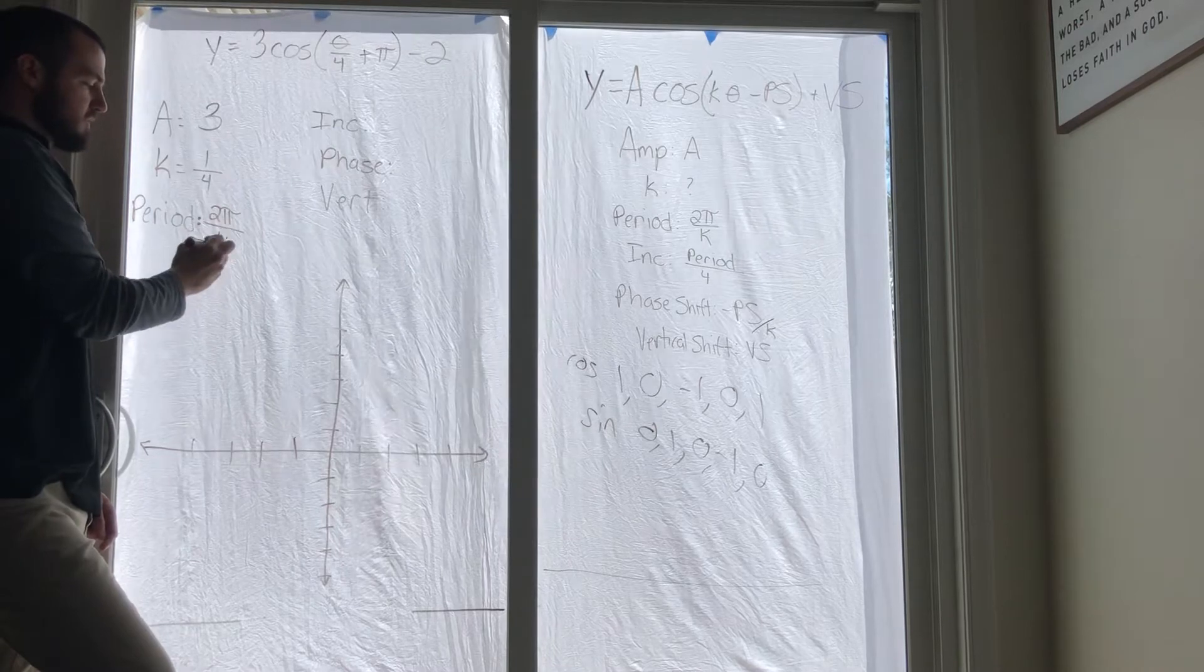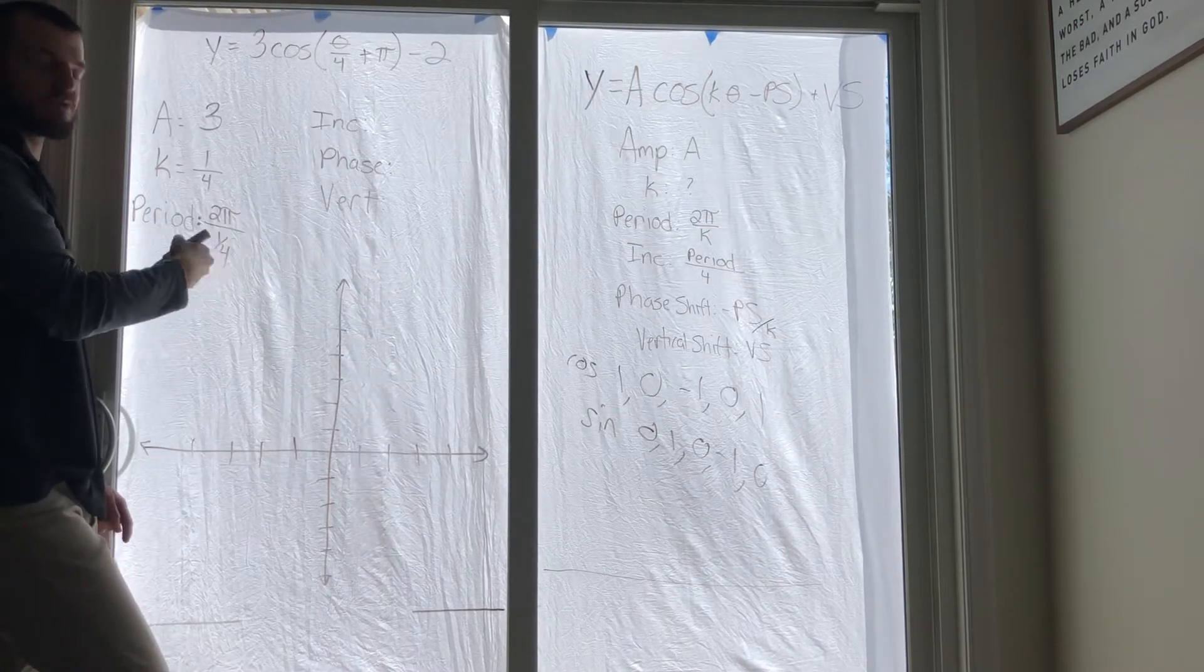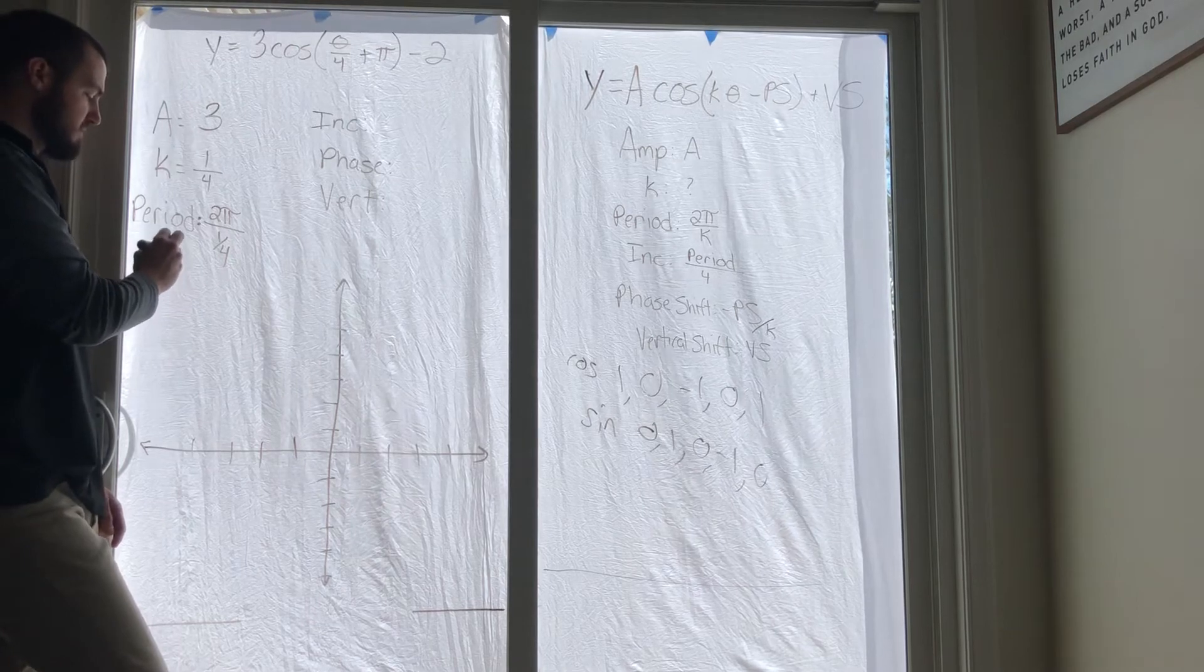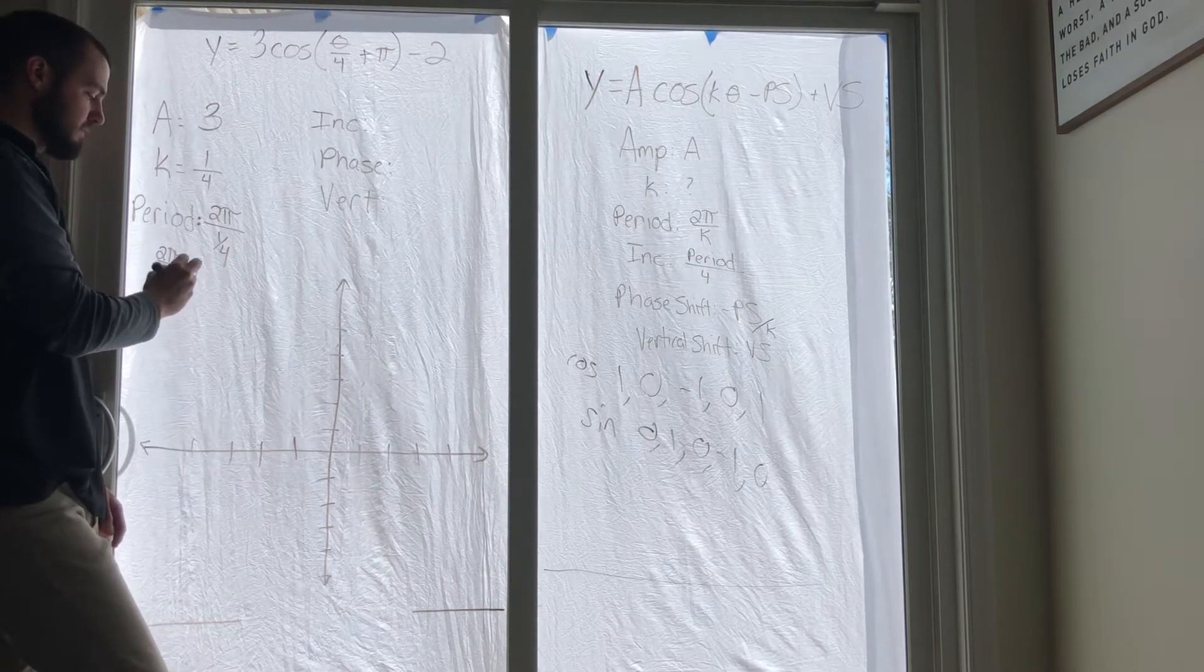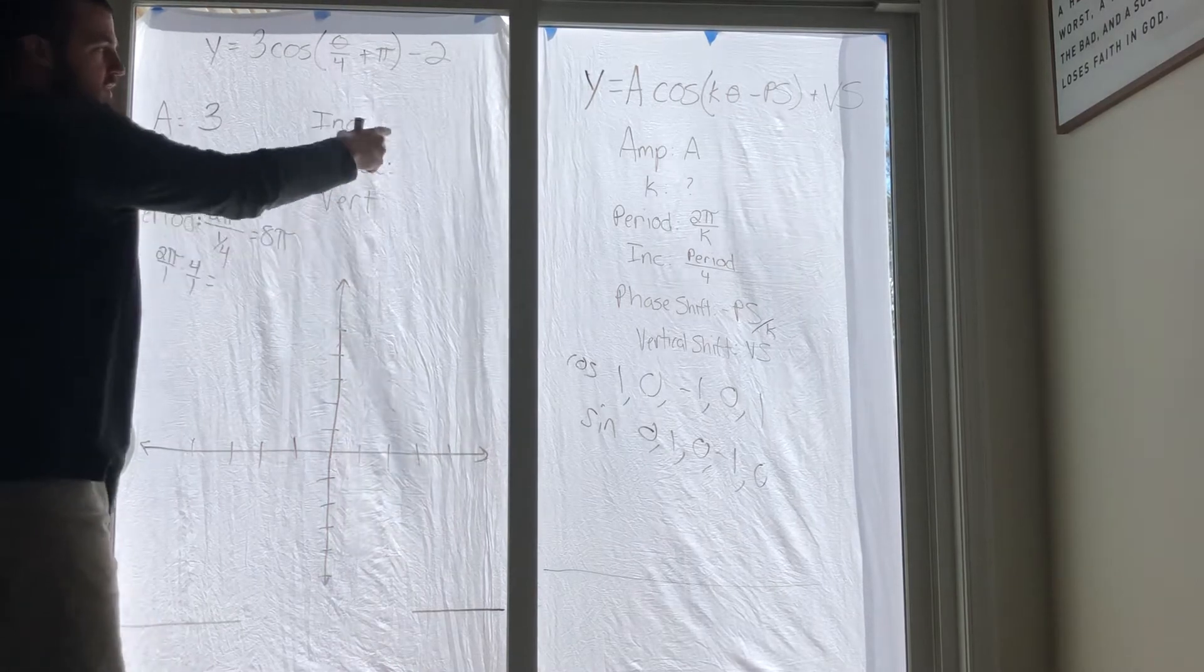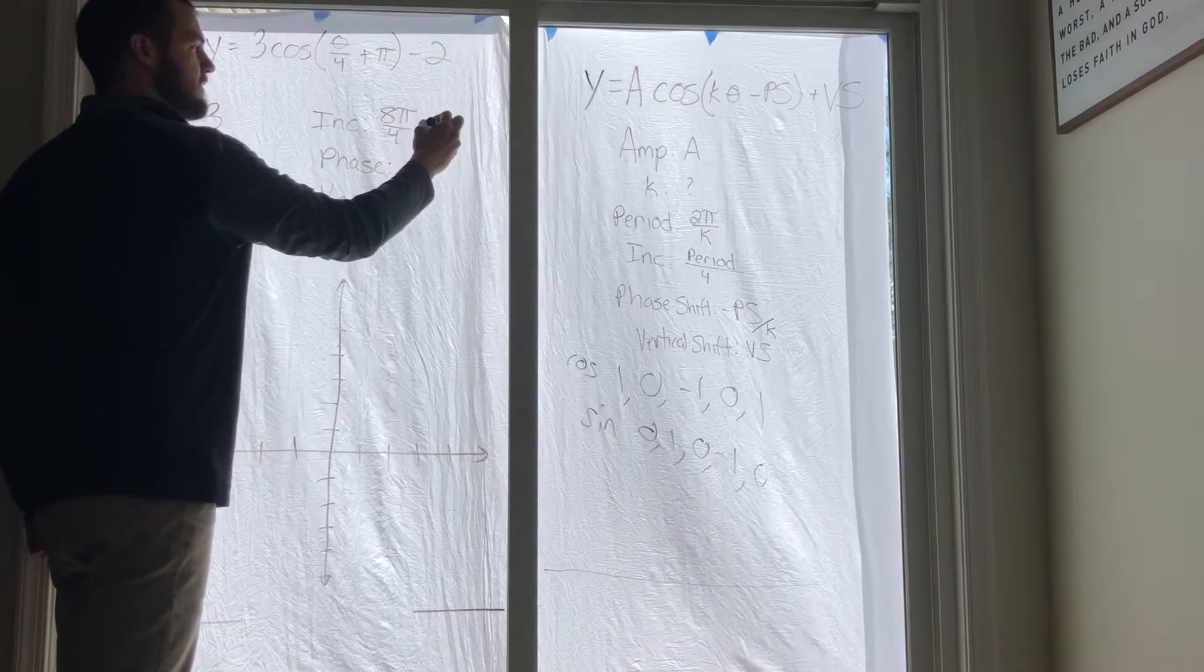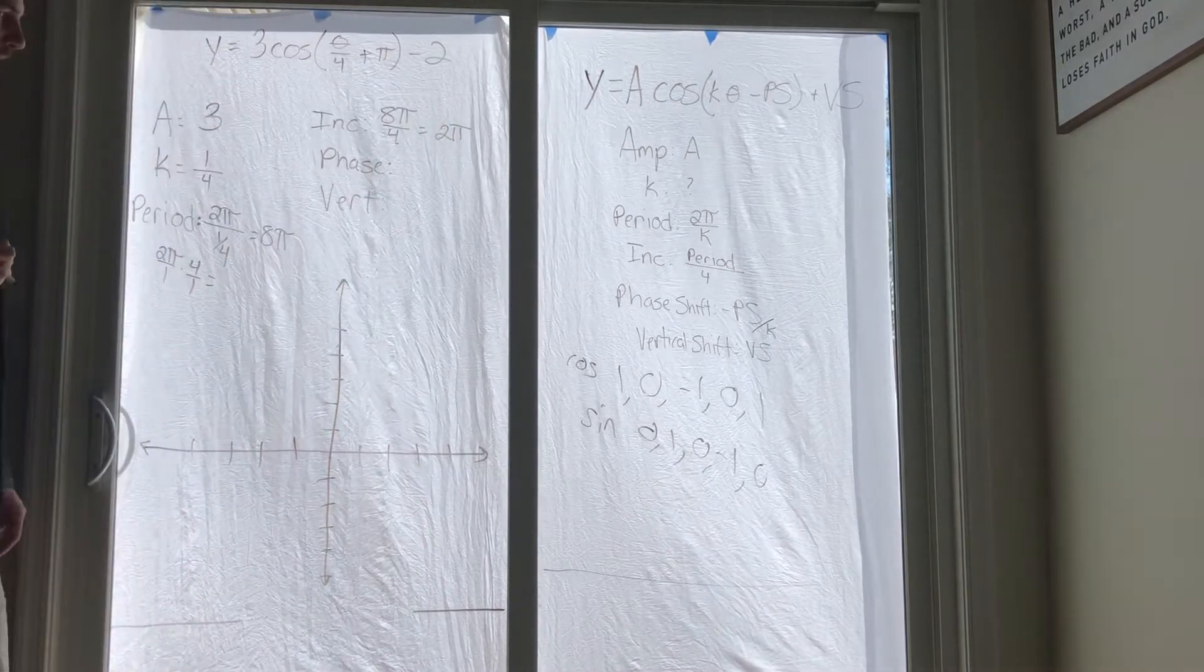Your period is 2π divided by your k value, which is 1/4. Again, it's a fraction, so make sure you multiply by the reciprocal - keep, change, flip, however you want to say it. It's going to be 8π. Your increments: you're going to take that period of 8π and divide it by 4, you get 2π.